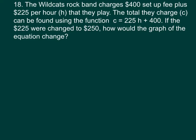So the total that they charge can be found using the function C, what they charge, is 225 times H plus the $400 setup fee.